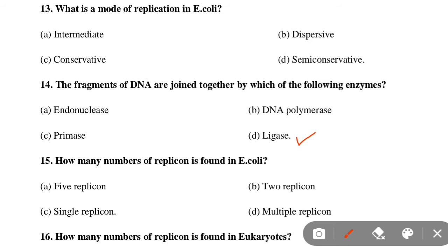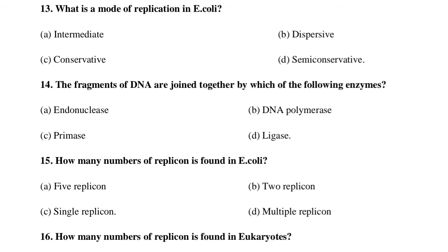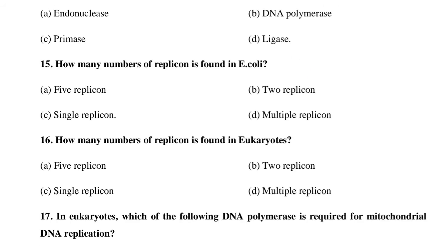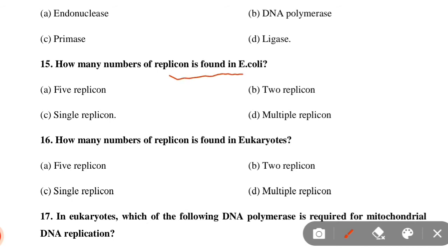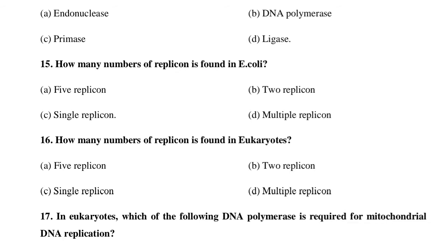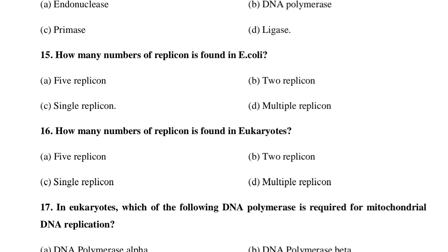Next MCQ: How many replicons are found in E. coli? Option A: 5 replicons, Option B: 2 replicons, Option C: Single replicon, Option D: Multiple replicons. Option C is correct — a single replicon is found in E. coli.